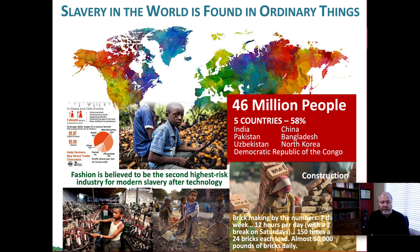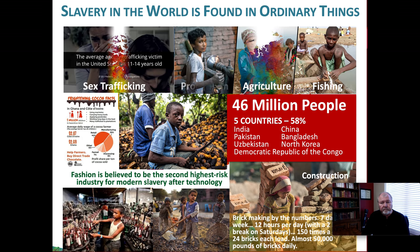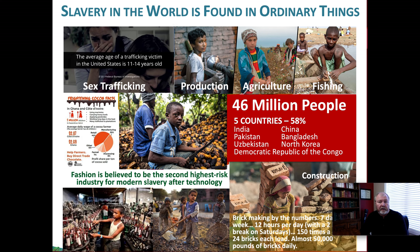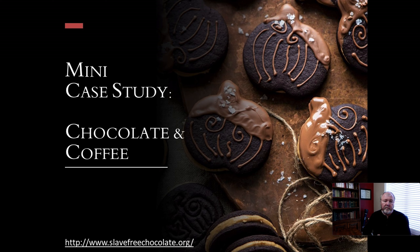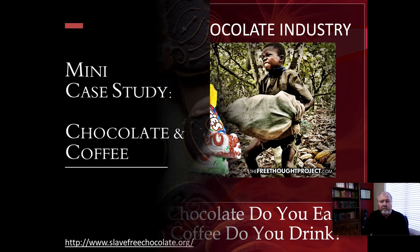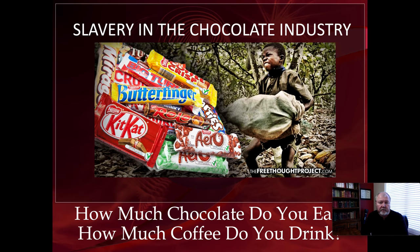In construction, in brick making, in cocoa, in sex trafficking — the average age of sex trafficking victims in the United States is between 11 and 14 years of age — in production and agriculture and fishing. Chocolate and coffee: far more than you expect. Slavery is seen in brand-name candy that most of you would recognize. A reasonable question to reduce your slavery footprint: how much chocolate do you consume? How much coffee do you drink? How much tea do I drink? I don't drink coffee, but I drink a lot of tea.